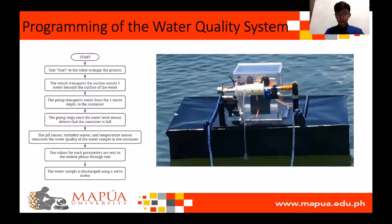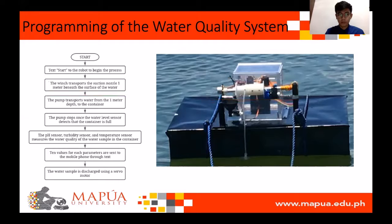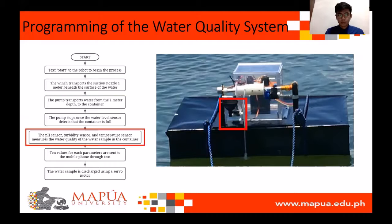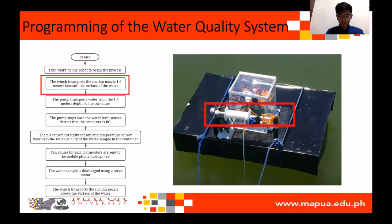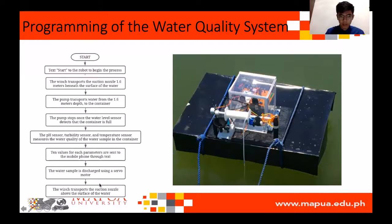In an actual test, the robot performs the following tasks: the winch transports the suction nozzle 1 meter beneath the surface of the water; the pump transports water from 1 meter depth to the container; the pump stops once the water level sensor detects the container is full; the pH, turbidity, and temperature sensors measure the water quality of the sample; 10 values for each parameter are sent to the mobile phone through text; and the water sample is discharged using a servo motor. The same steps are done for depths of 1.3 and 1.6 meters, after which the winch transports the suction nozzle above the water surface.